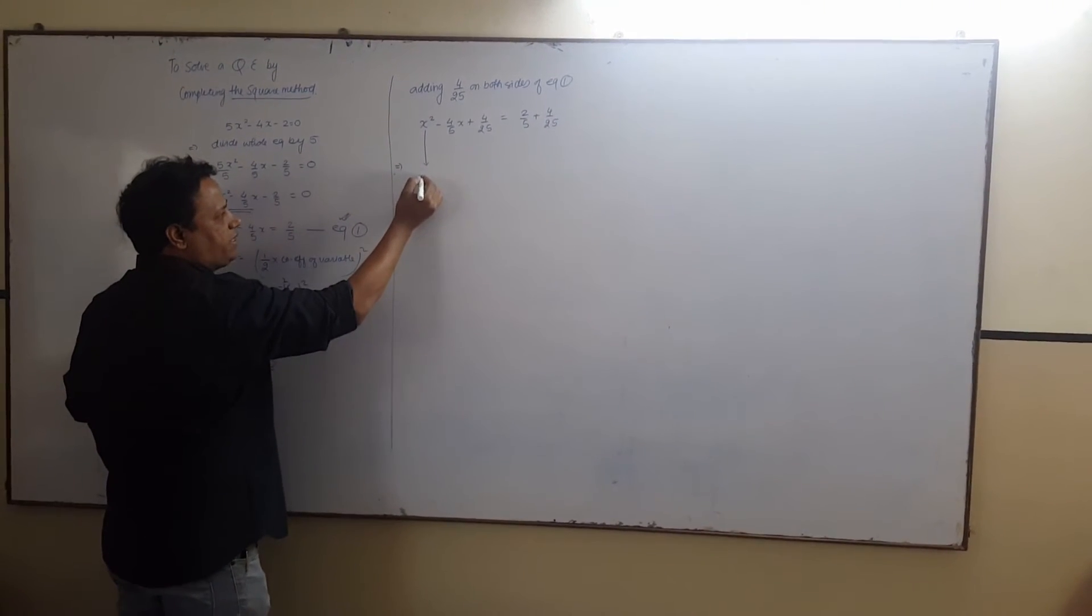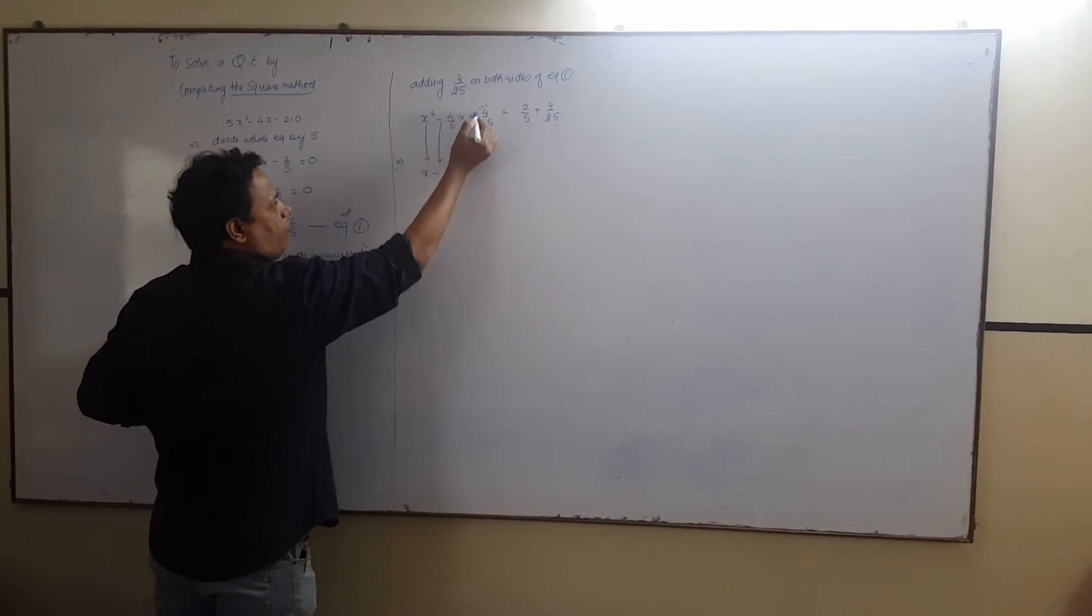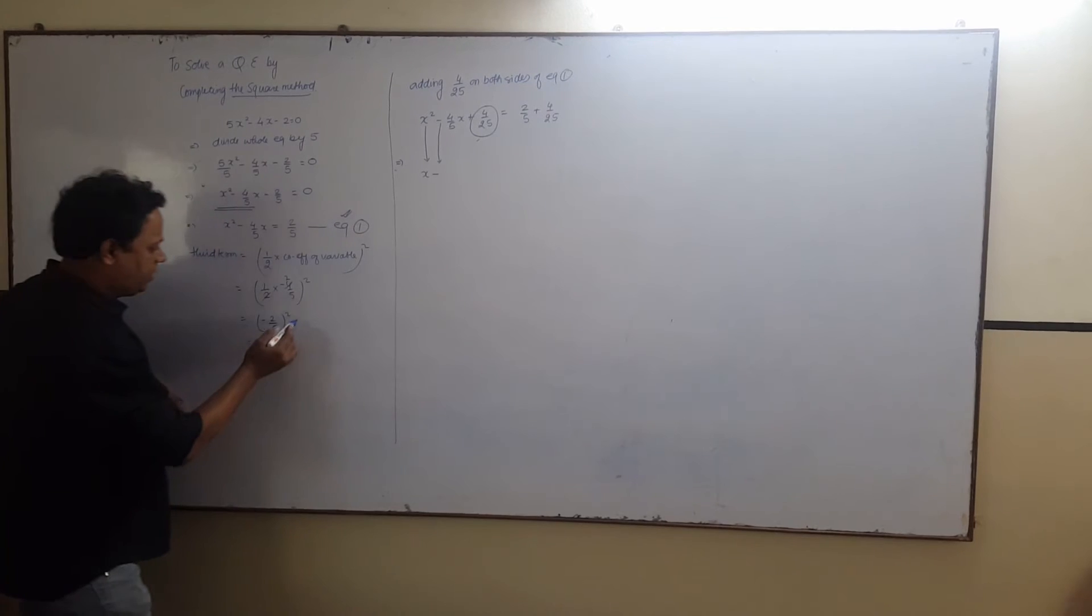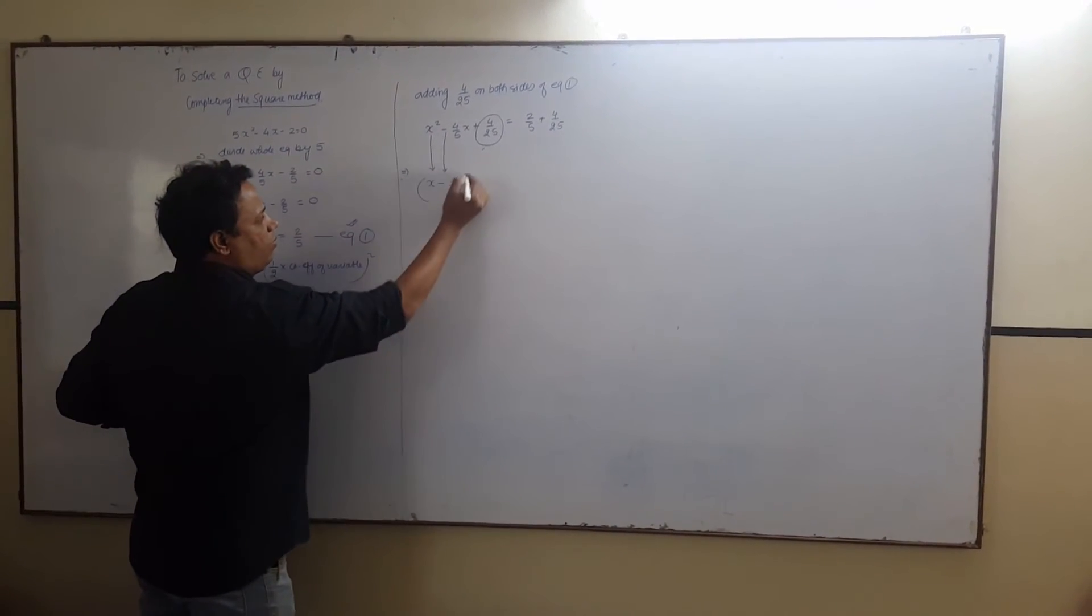x square as it is, minus 4 as it is. And for 4 upon 25, see this term over here, minus 2 upon 5. Just write minus 2 upon 5 whole square.